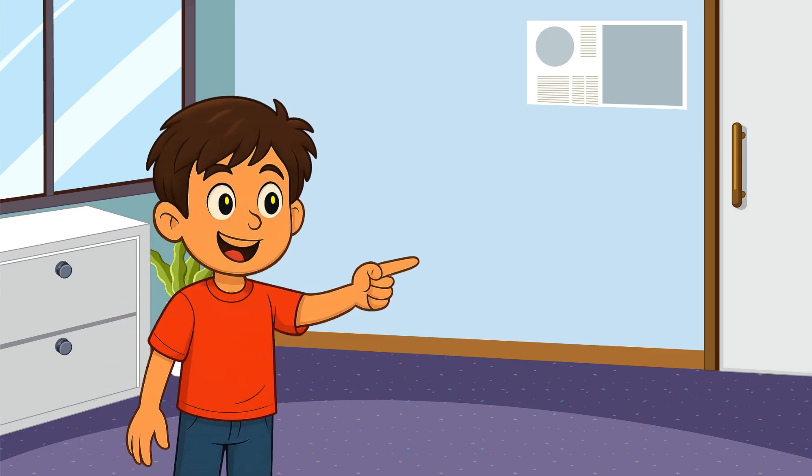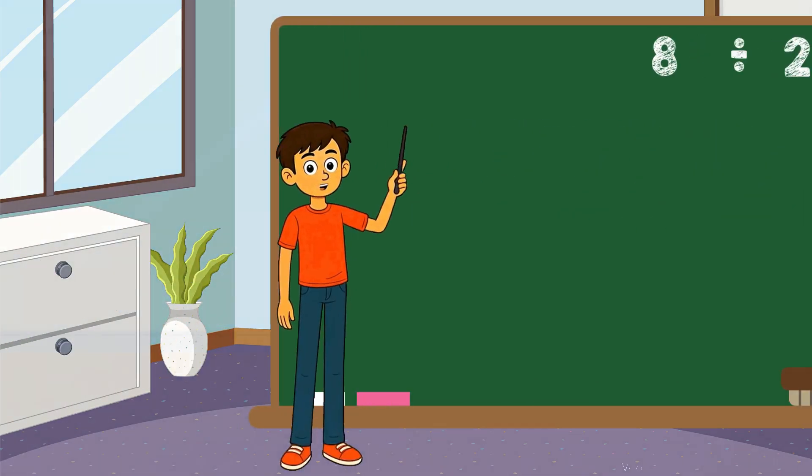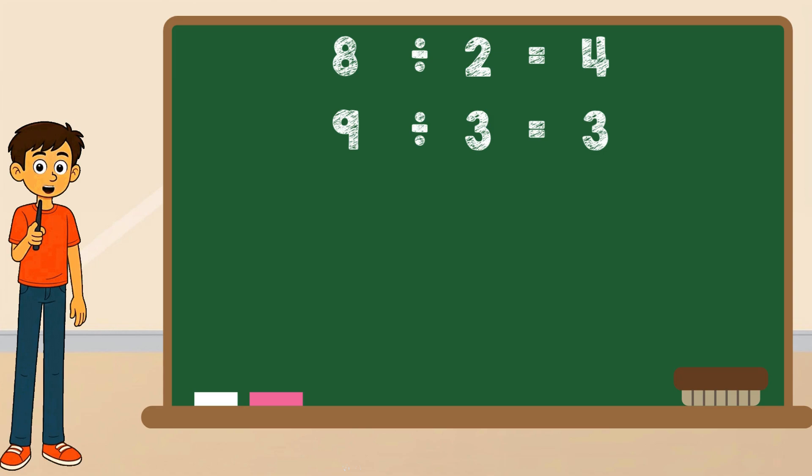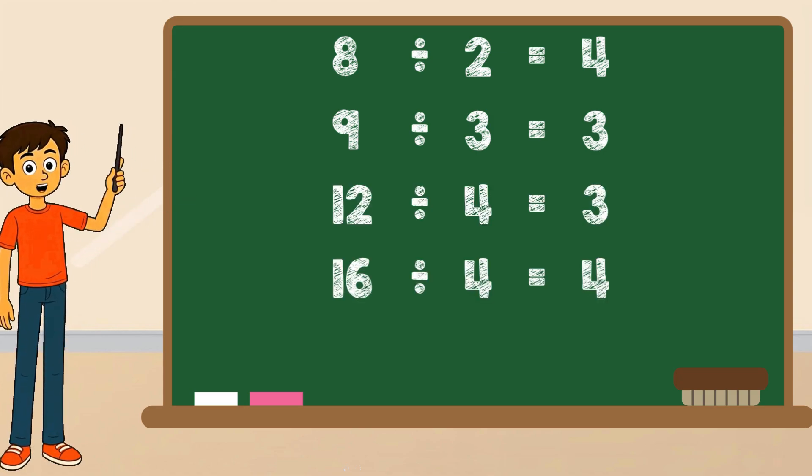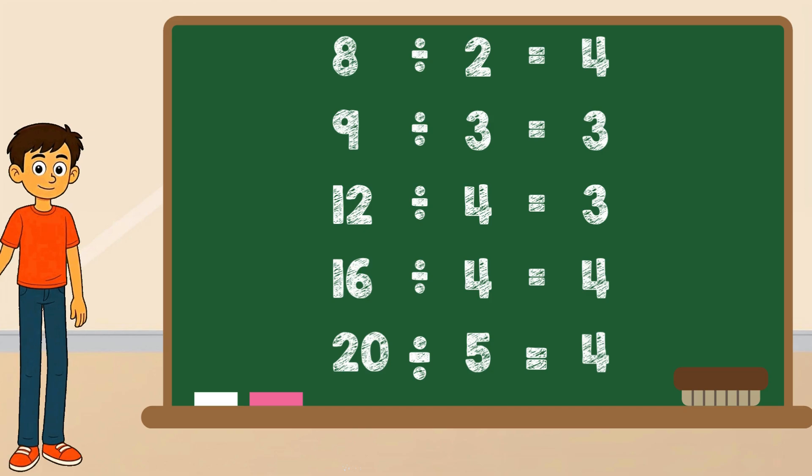Now let's look at some division facts to help us remember the easy ones. Eight divided by two equals four. Nine divided by three equals three. Twelve divided by four equals three. Sixteen divided by four equals four. Twenty divided by five equals four. See the pattern?